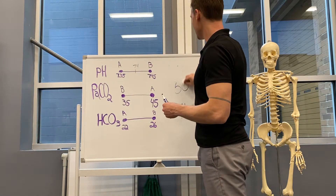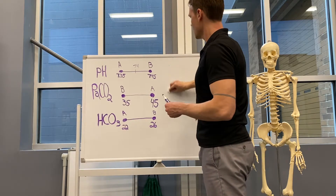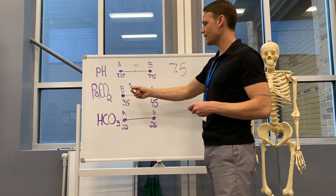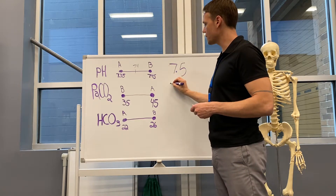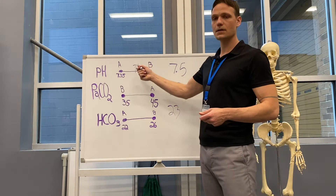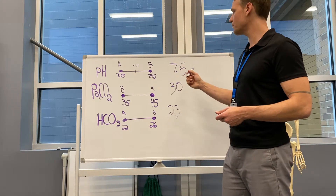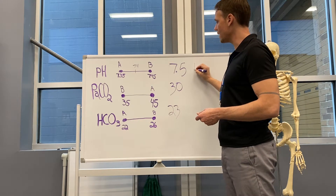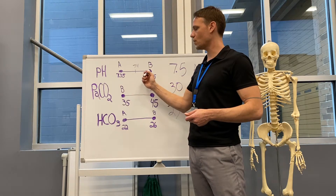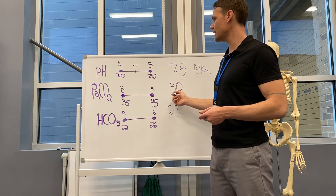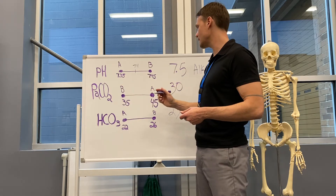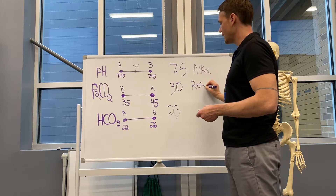Let's look at another example. If our pH is 7.5, PaCO2 is 30, and bicarb is 23 — first, pH is above 7.45, so that's alkalosis. We match it with the value that's also off: PaCO2 is 30, which is under 35 — that's a base. B matches with B, so right away we can see that it's respiratory alkalosis.